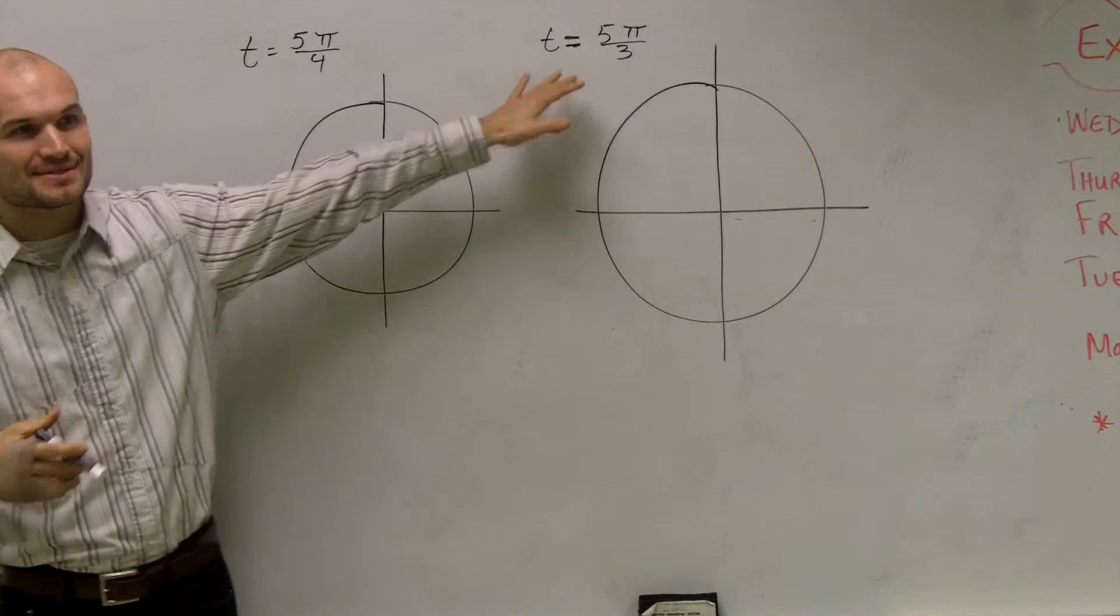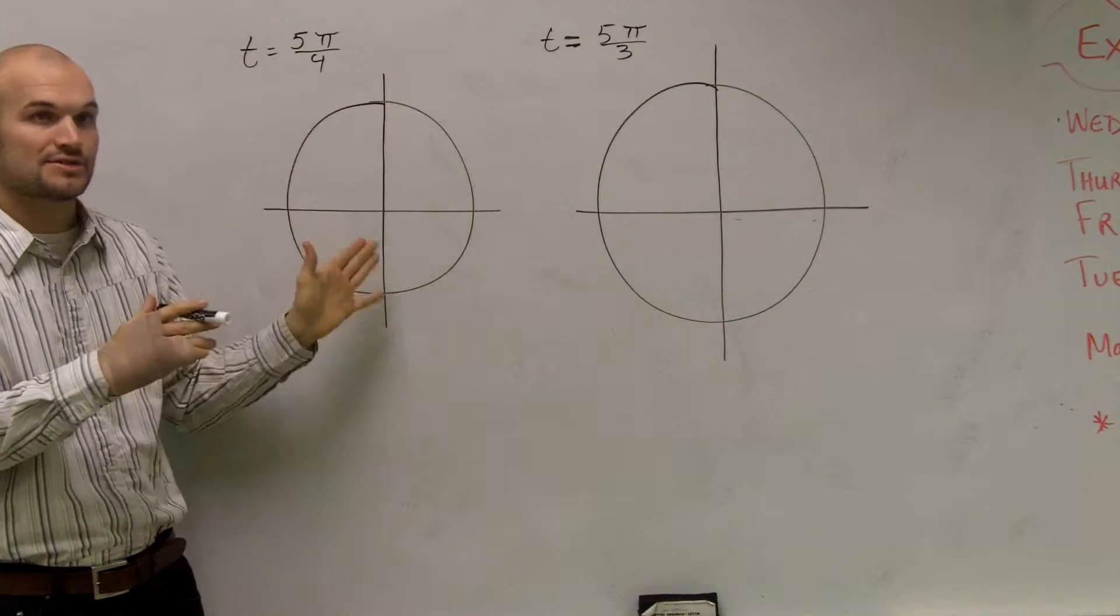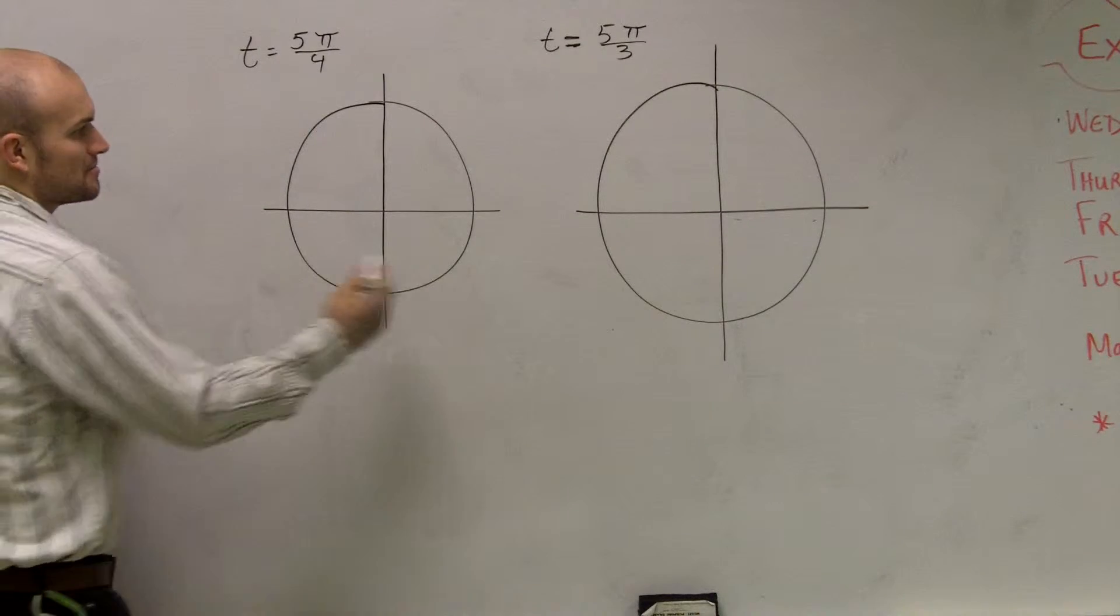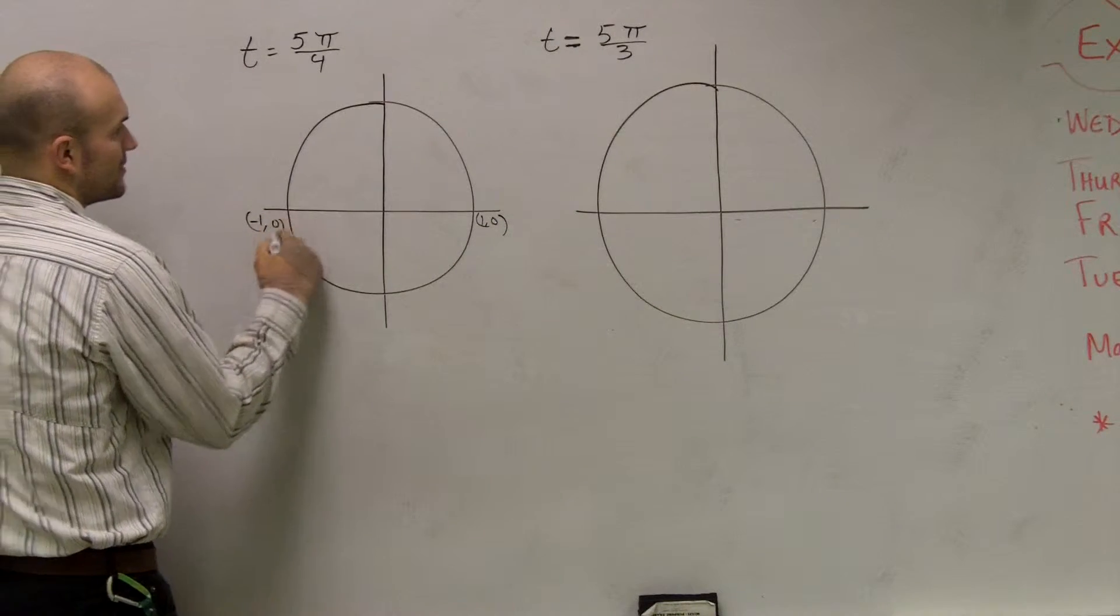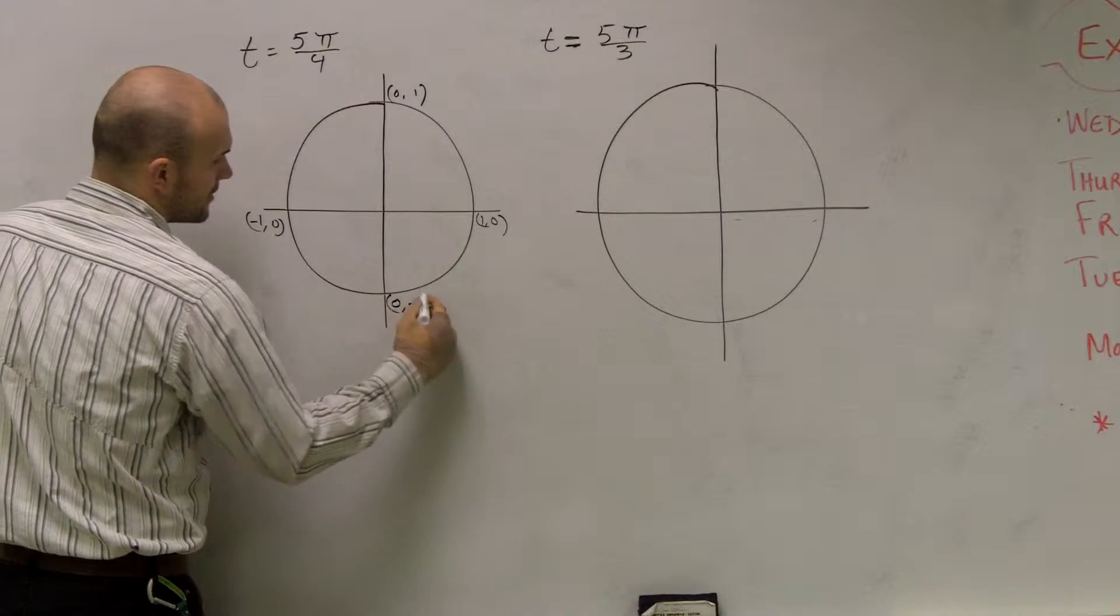If you guys look, we have these two angles. Remember what T represents - T represents a point on my unit circle. And if you guys remember, all our unit circle is, is just a circle given on these coordinate points: negative 1 comma 0, 0 comma 1, and 0 comma negative 1.